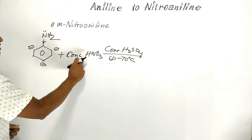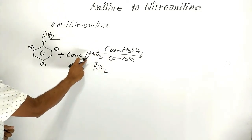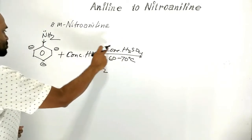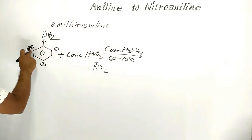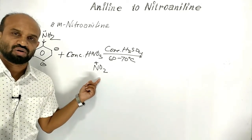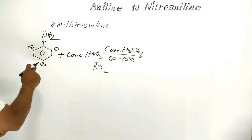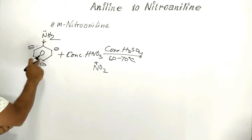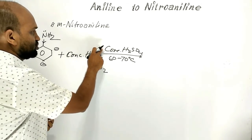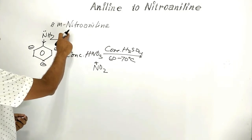the nitronium ion, produced from the mixture of concentrated nitric acid and concentrated sulfuric acid, is supposed to bond to ortho positions and the para position to form ortho-nitroaniline and para-nitroaniline. But when aniline is treated with the mixture of concentrated nitric acid and concentrated sulfuric acid, meta-nitroaniline is formed instead.